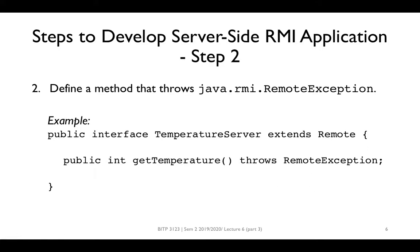In the second step, we need to define a method that will throw RemoteException, which is an exception class from the java.rmi package. Here we have a method named getTemperature. This method returns an integer value and throws RemoteException.